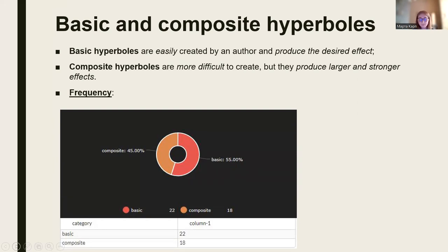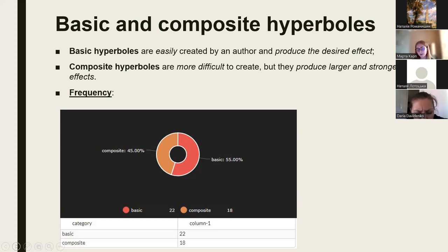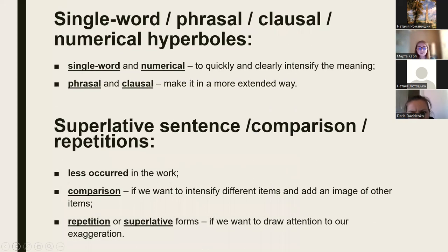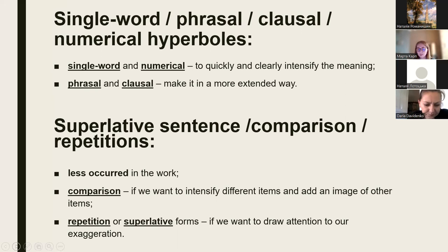Let us take a look at how frequently basic and composite hyperboles are used — see figure number one. The frequency of use of basic and composite hyperboles in the novel has been investigated using a sample of the initial portions of the novel. Basic hyperboles are used more frequently than composite hyperboles. Single-word, phrasal, clausal, and numerical hyperboles have all been studied. Single-word hyperboles consist of only one word which generates the intended exaggerated effect. Different word combinations are used to create phrasal hyperboles. Clausal hyperboles have word components dispersed across the sentence or clause. Numerical hyperboles are created using various sorts of numerals and contribute to larger-scale hyperboles.